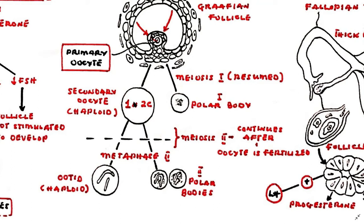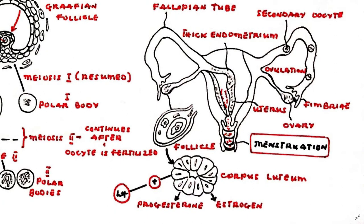The oocyte is thus able to retain its size but discard chromosomal material to become a haploid cell ready for fertilization. One polar body is formed with meiosis 1, and two polar bodies are formed with meiosis 2. The secondary oocyte begins meiosis 2 but this division is again halted — this time at metaphase 2. Meiosis 2 will only continue if the oocyte is fertilized. With ovulation, the secondary oocyte is passed into the uterine tube while the follicle remains within the ovary.